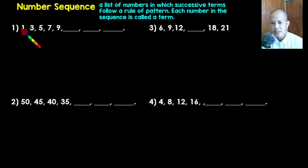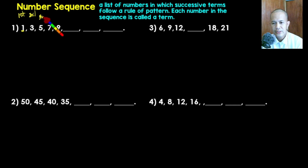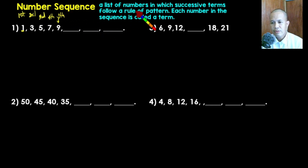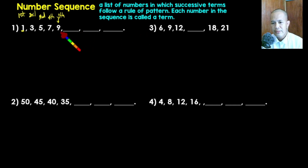We're going to start always on the first term. In example number one, one is your first term, three is your second term, and five is your third term. Seven is the fourth term, nine is your fifth term. We are looking for the sixth, seventh, and eighth terms. In number sequences, we're going to formulate a formula that we can apply for finding the next continuing terms.